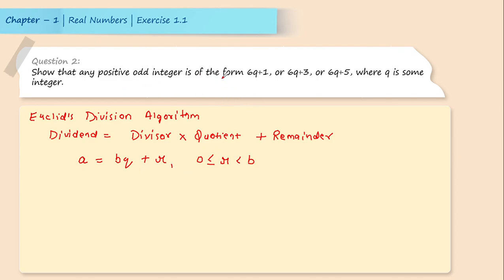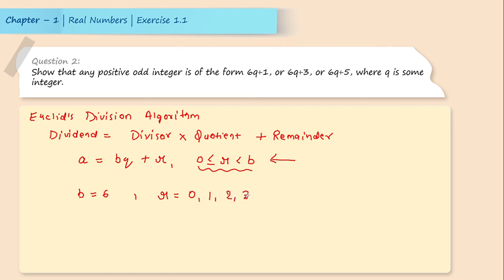As we can see in the question, we have integers of the form 6q+1, 6q+3, and 6q+5. Comparing with a = bq + r, clearly b is 6. Since r lies between 0 and b, the possible values of r are 0, 1, 2, 3, 4, and 5 — because r must be strictly less than b which is 6.